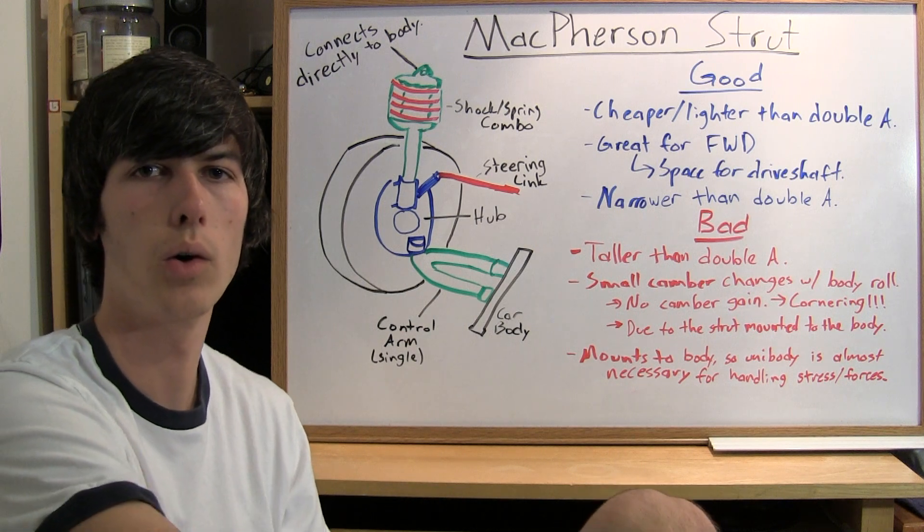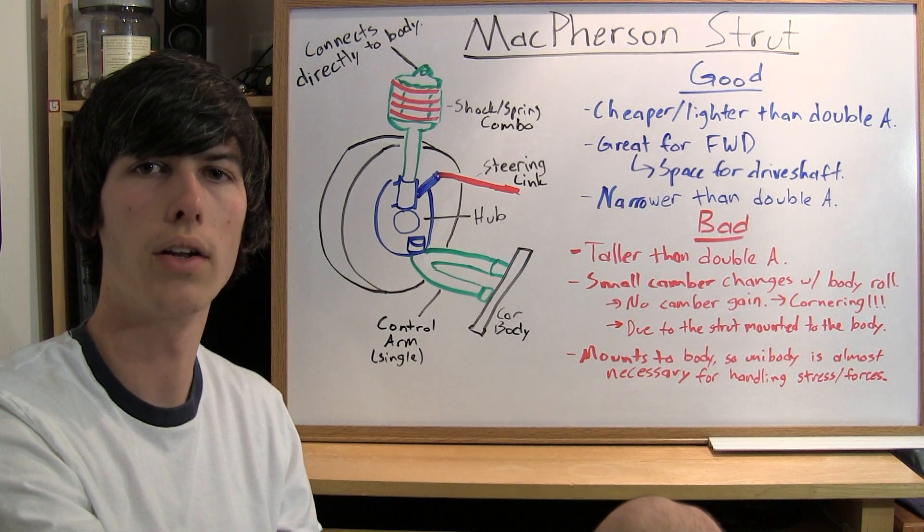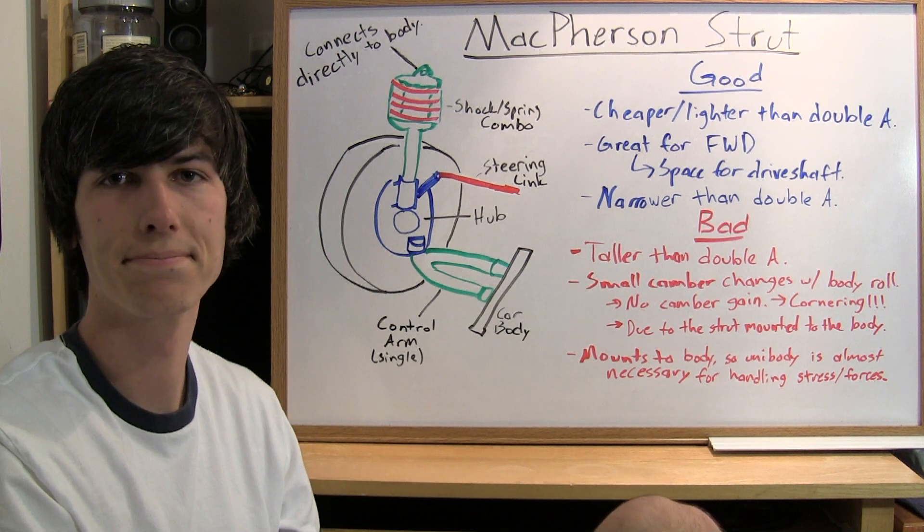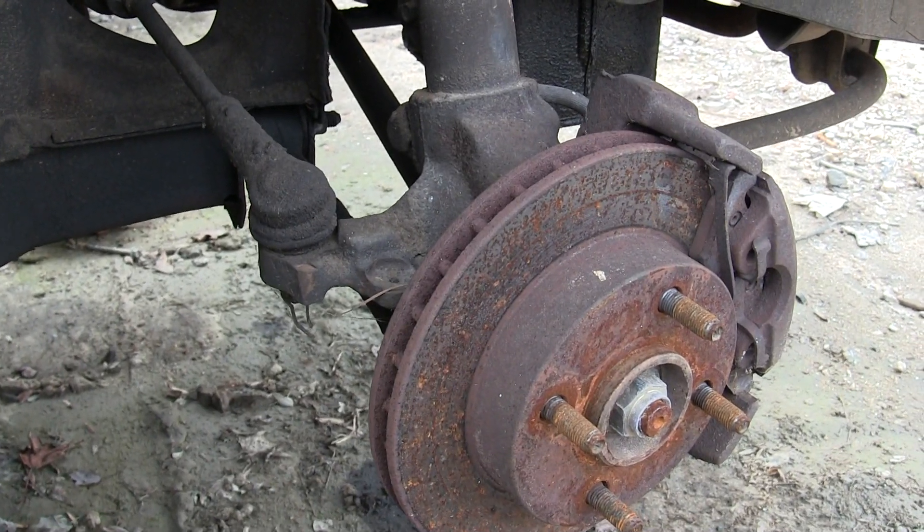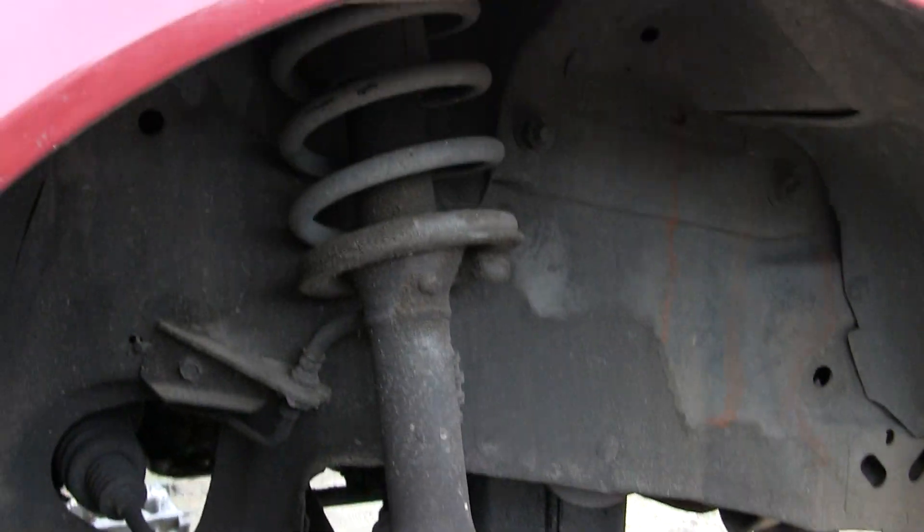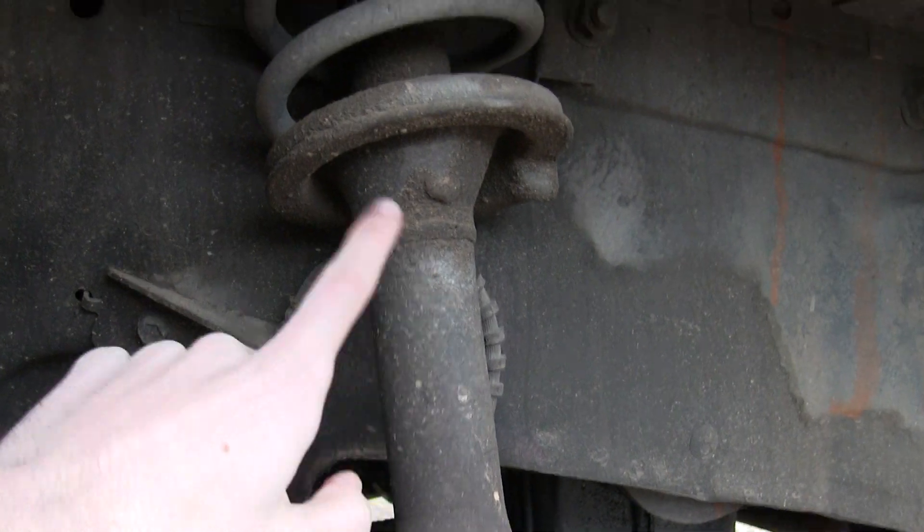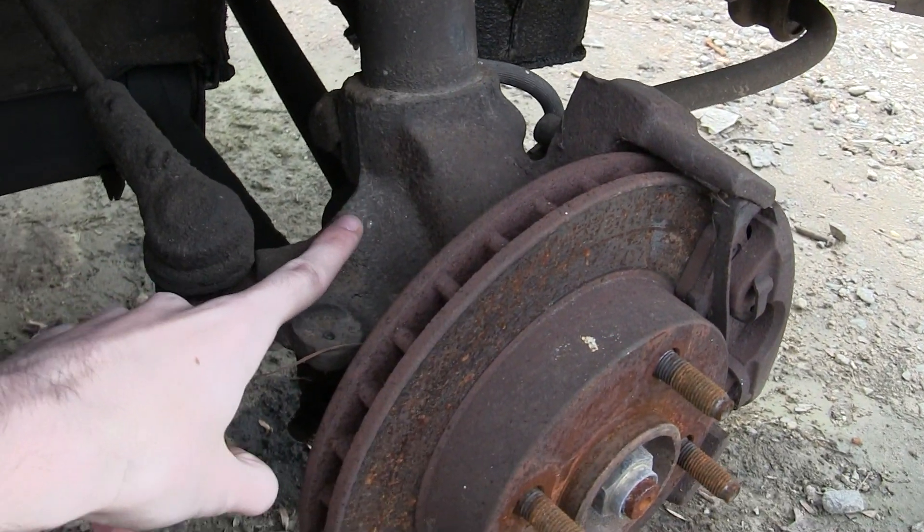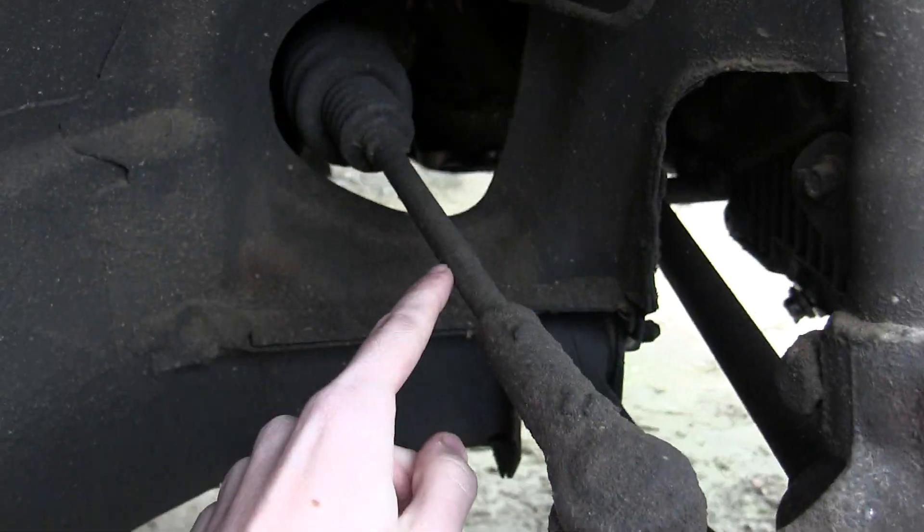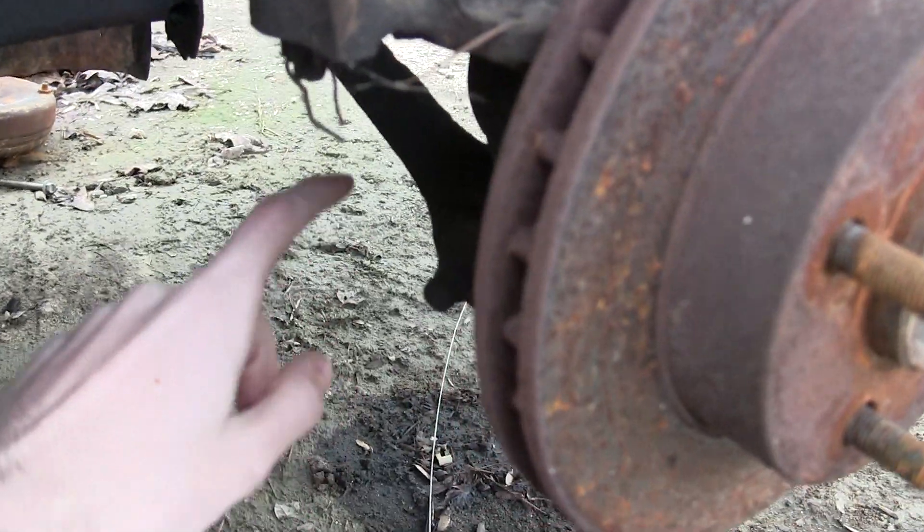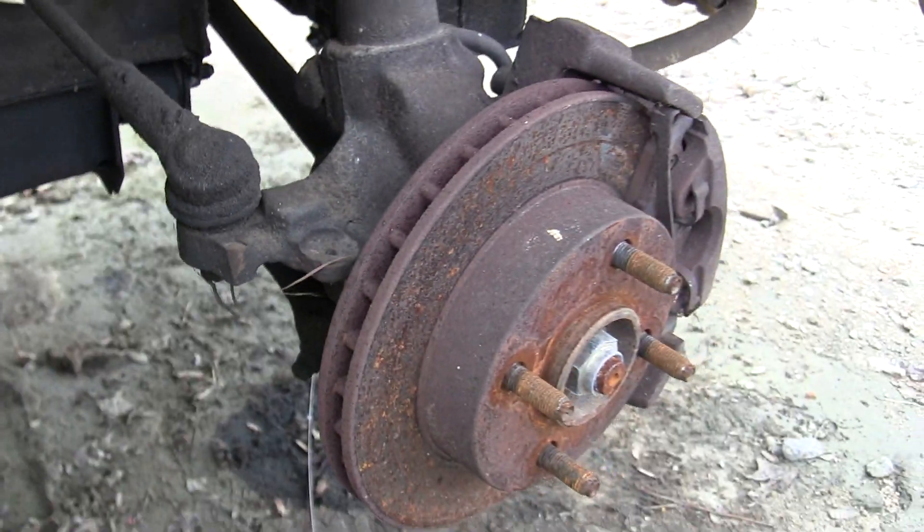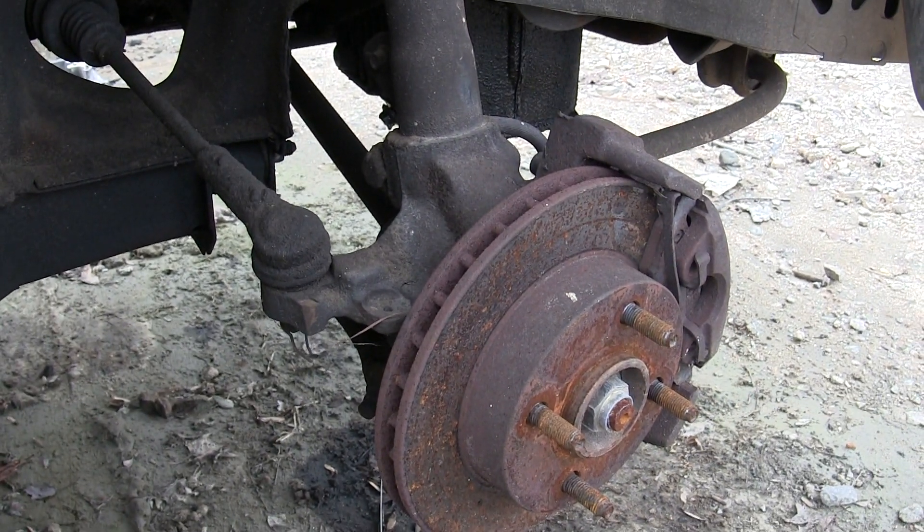My next video, coming up in about a week, should be on solid rear axle type suspensions. So here we have the basic McPherson strut suspension setup. You can see the spring shock combination mounted to the body of the car and adhered at the top of the hub. There's a steering line that comes in here, and here's the lower control arm at the bottom. That's your basic McPherson strut setup.